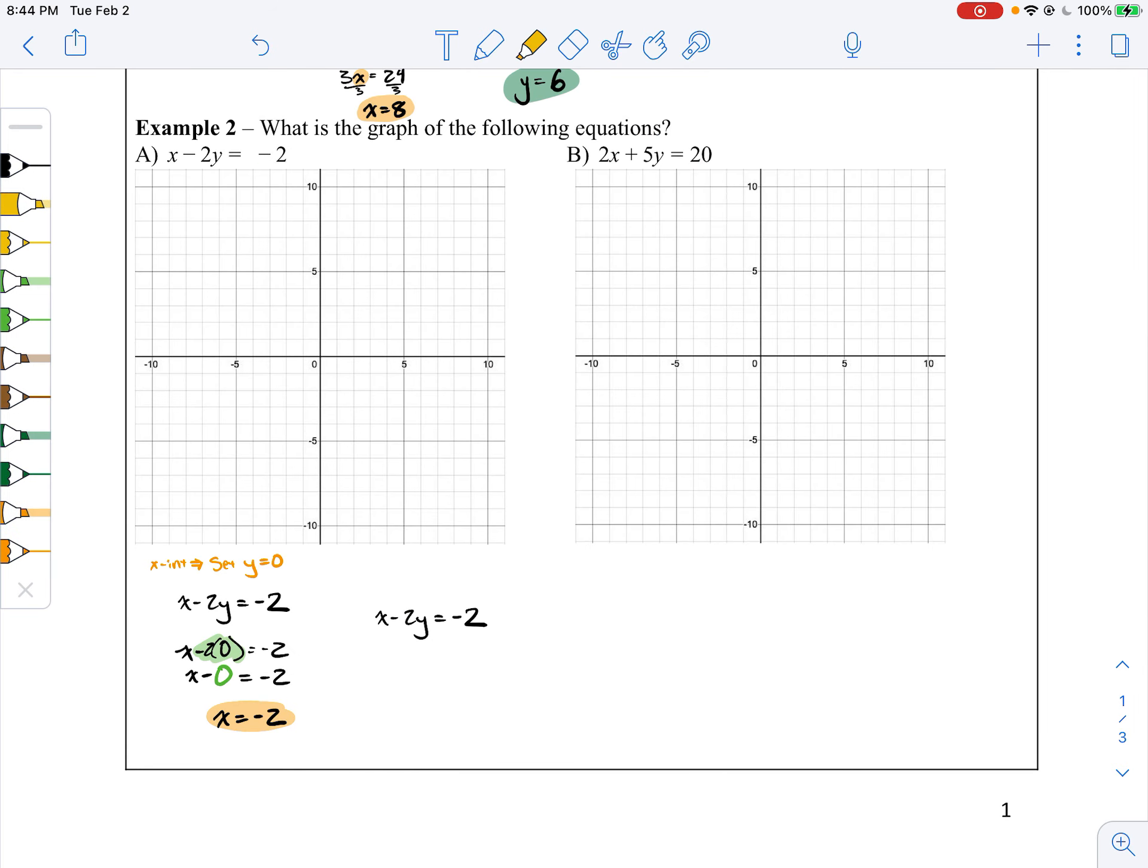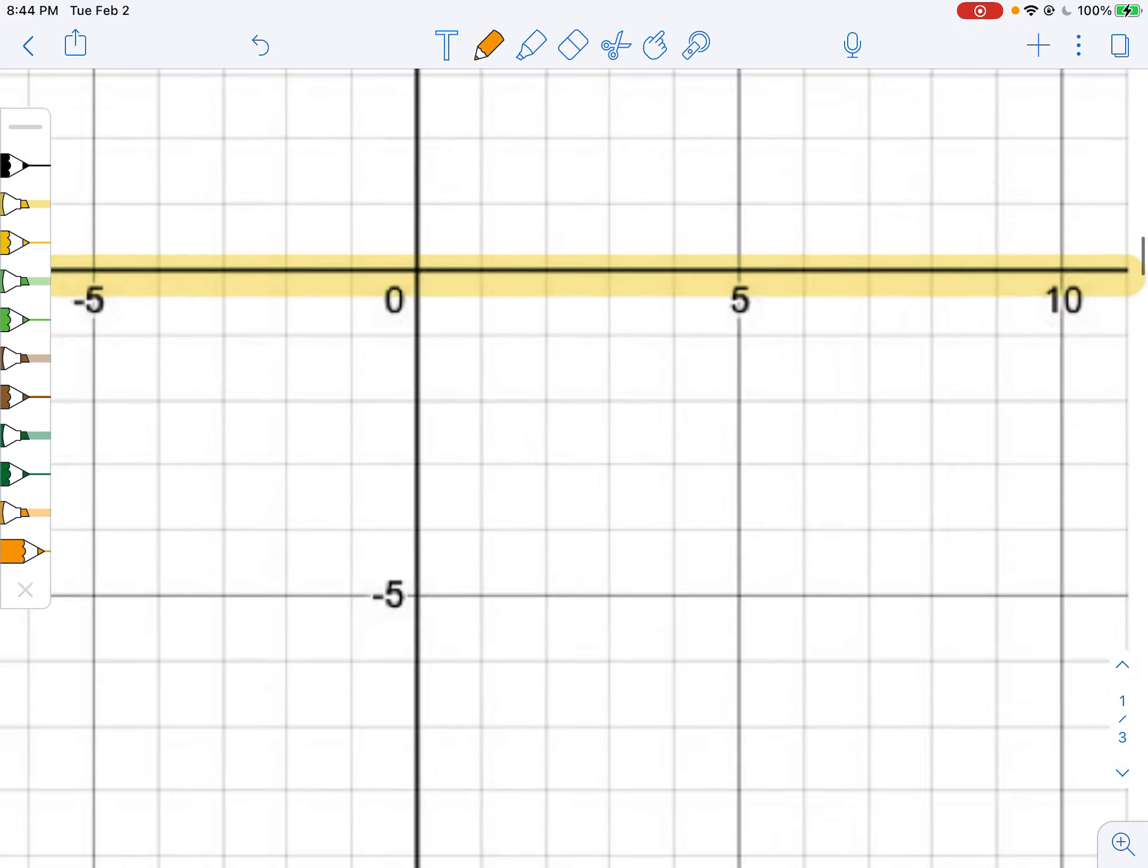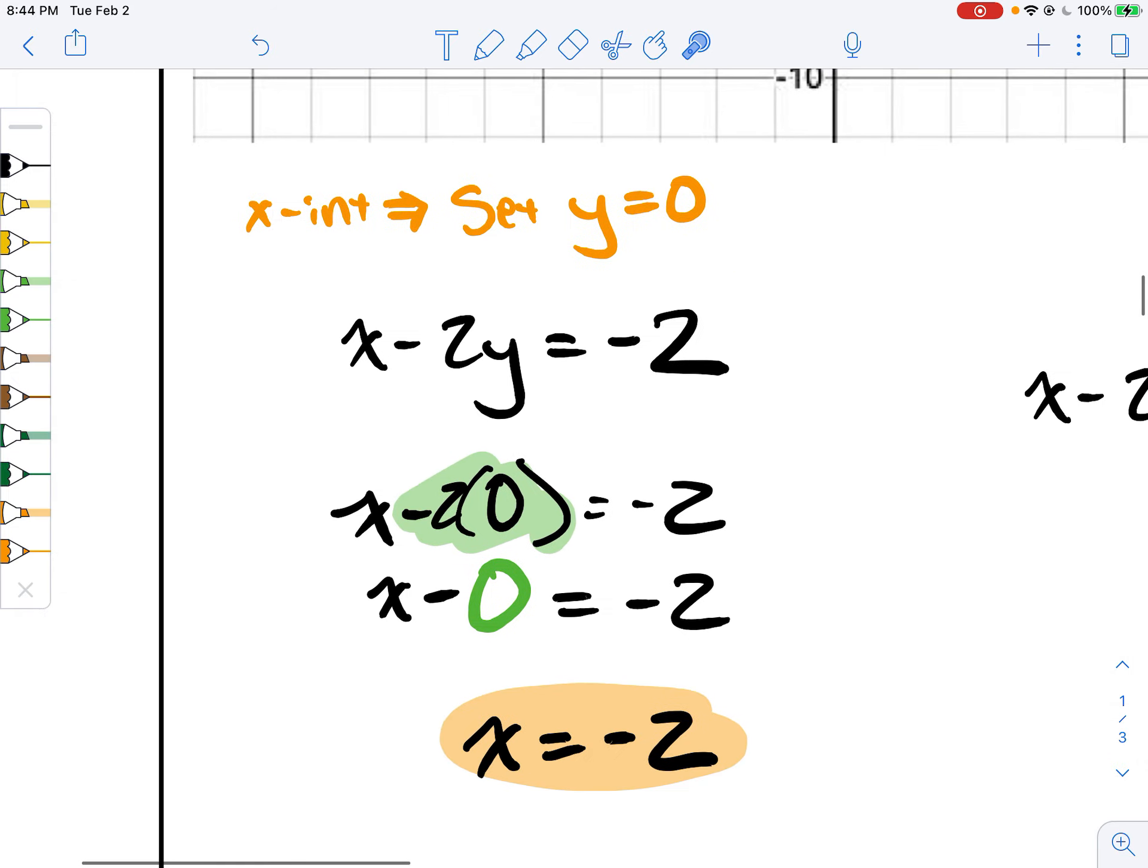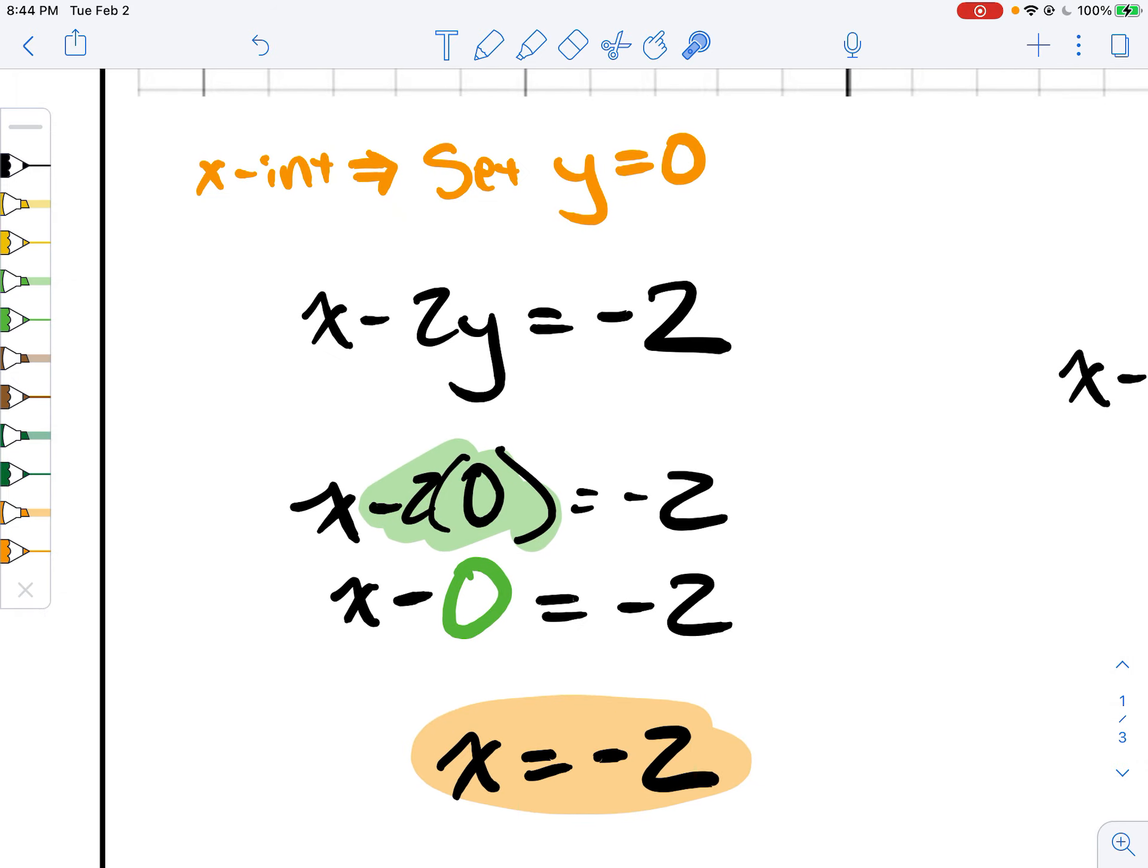Since x equals negative 2, let's go to that x-axis and plot a negative 2 on there. Right there. Notice how we go over 2, up nothing. We go up nothing because we're right on the axis. And that's why y equals 0.